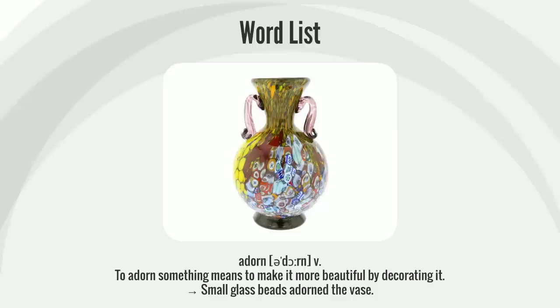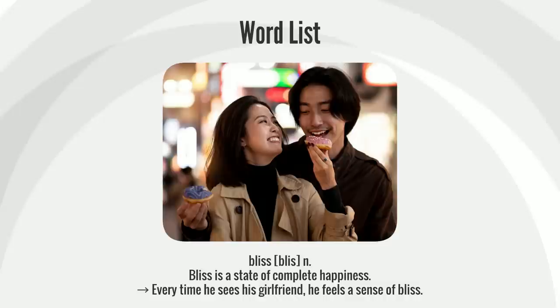To adorn something means to make it more beautiful by decorating it. Small glass beads adorned the vase.